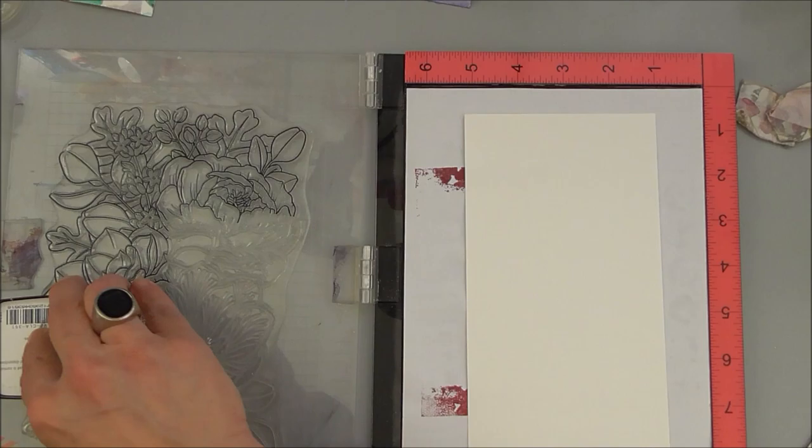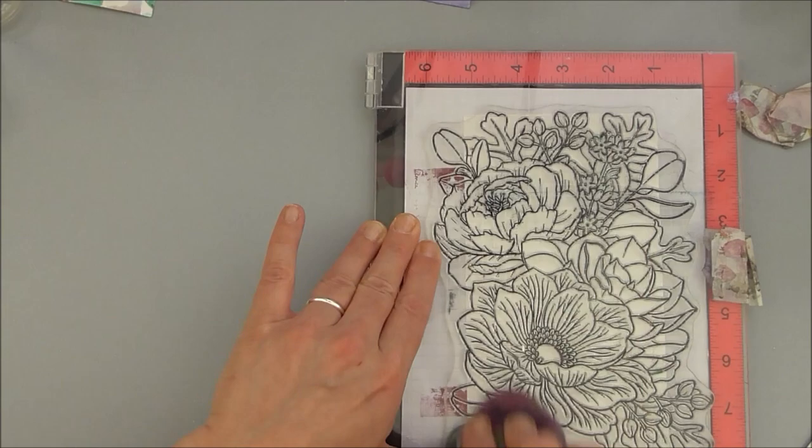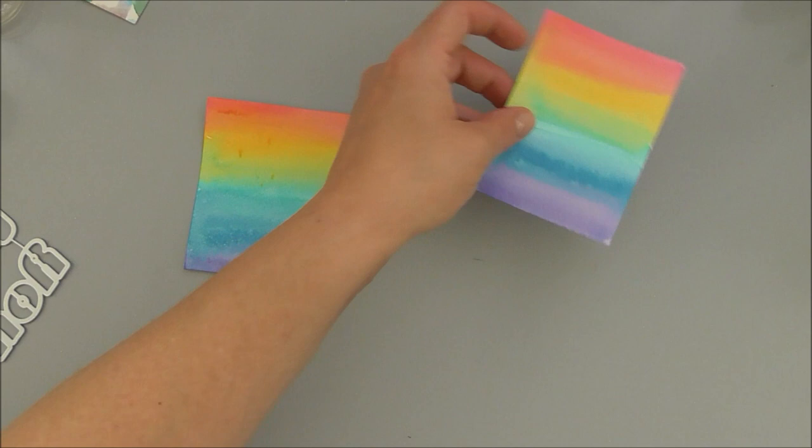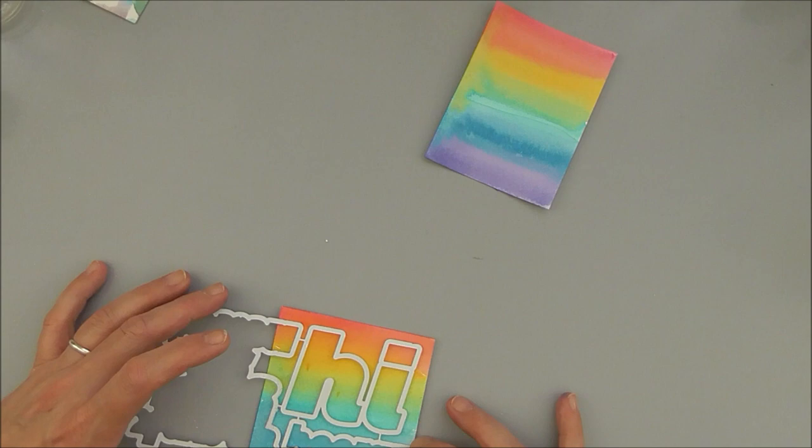In the time where my rainbows are drying, I'm going to stamp my background for the card. This is the big and very beautiful Crafty Meraki stamp. And I stamped it over my whole background because I absolutely love that design.